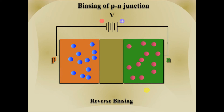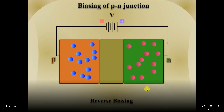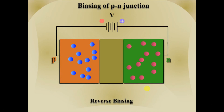In reverse biasing, no majority carriers are able to diffuse through the junction and hence there is no current due to majority carriers. However, the high reverse voltage accelerates some minority carriers to cross the junction and hence a small reverse current flows through the junction. We can conclude that the resistance of a PN junction is very high when reverse biased.